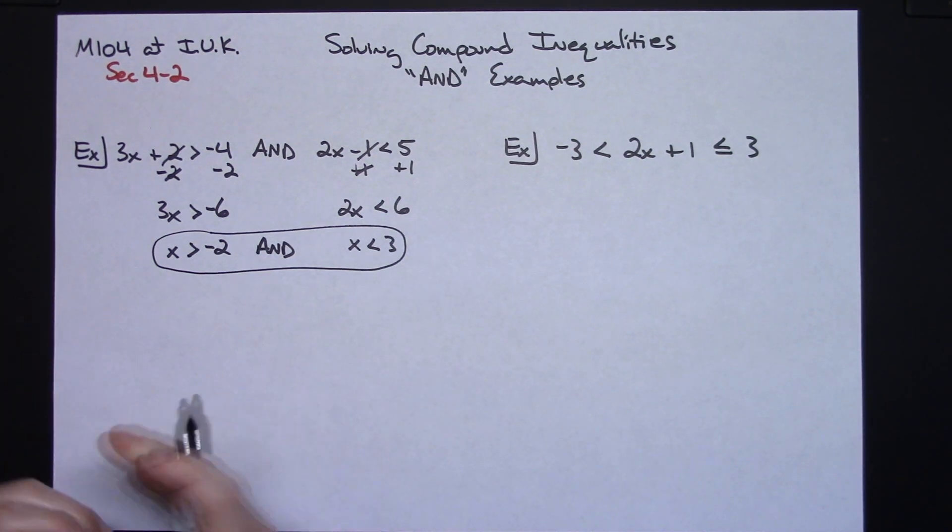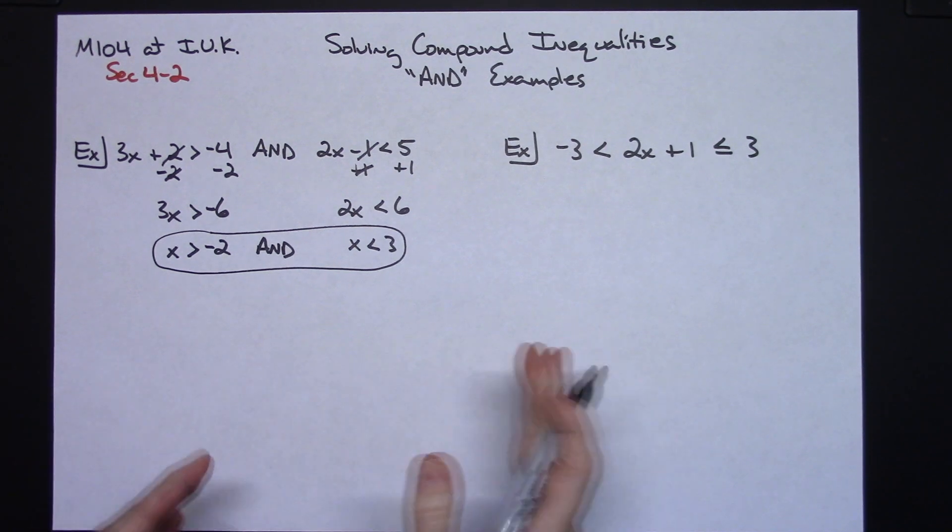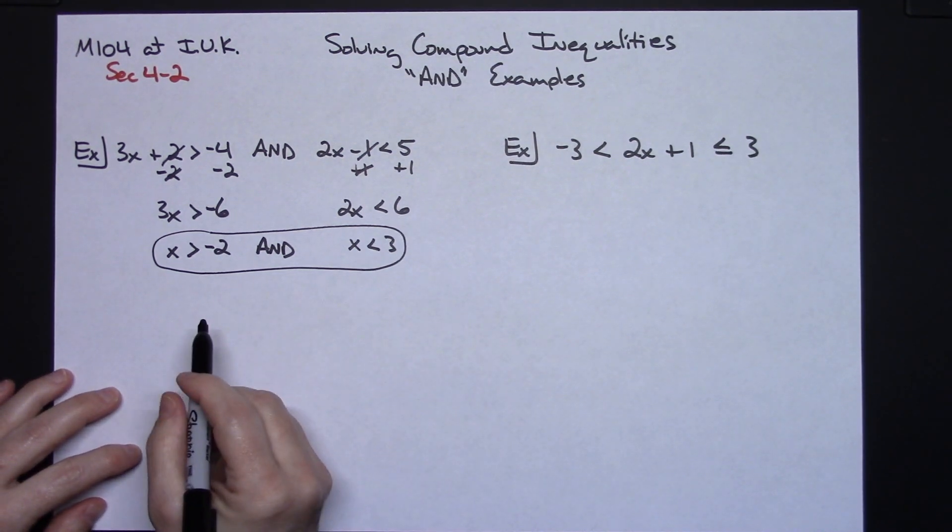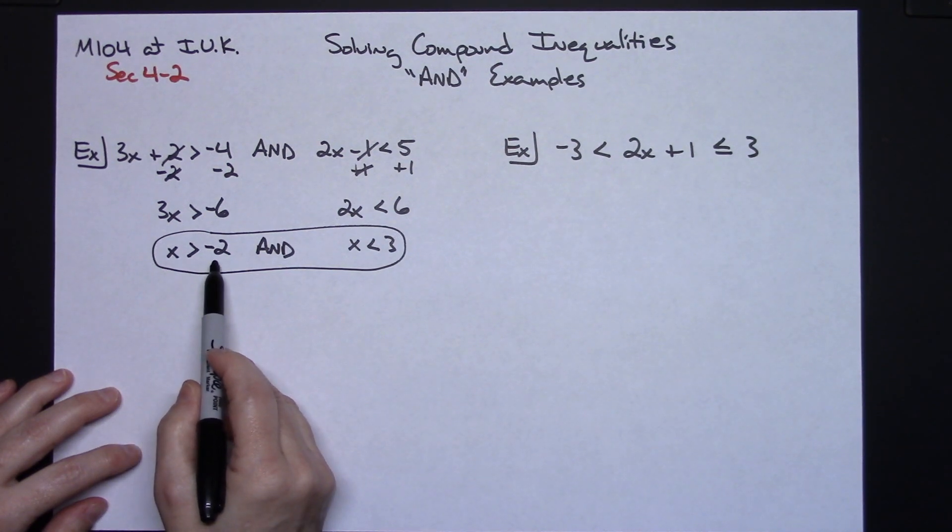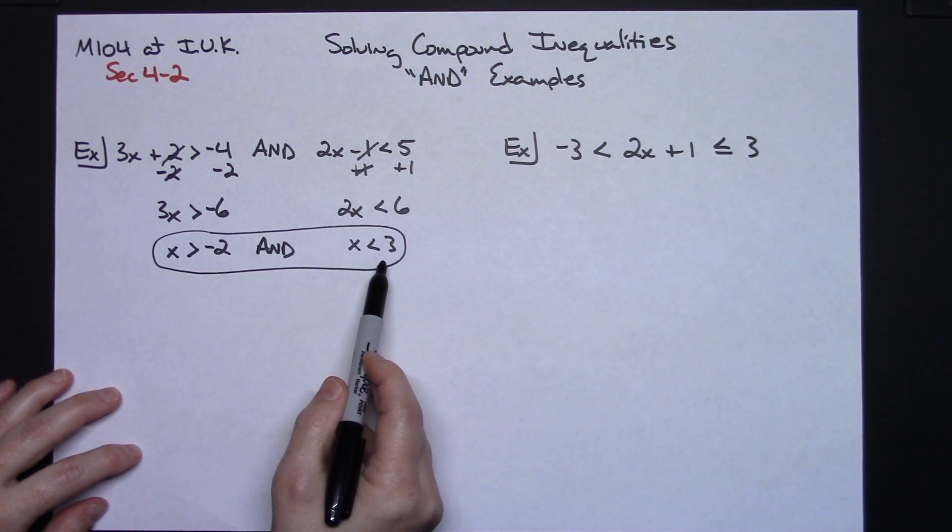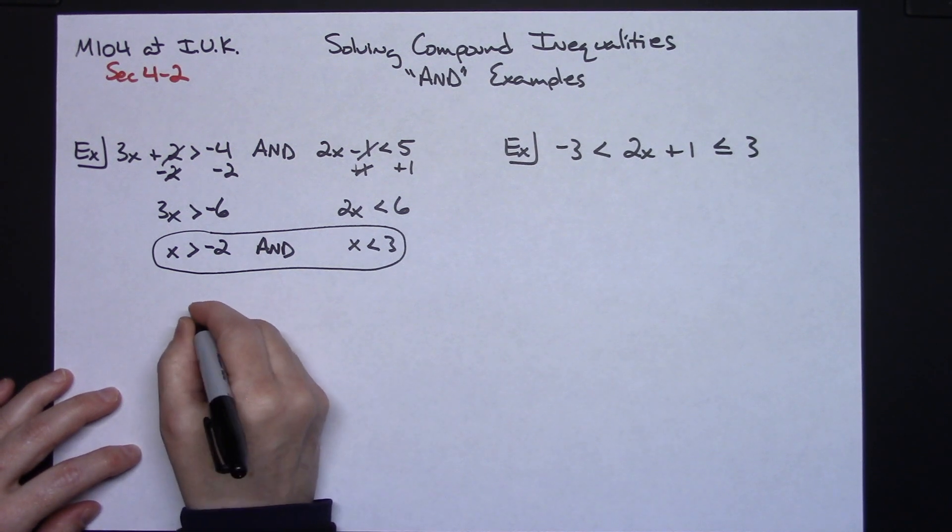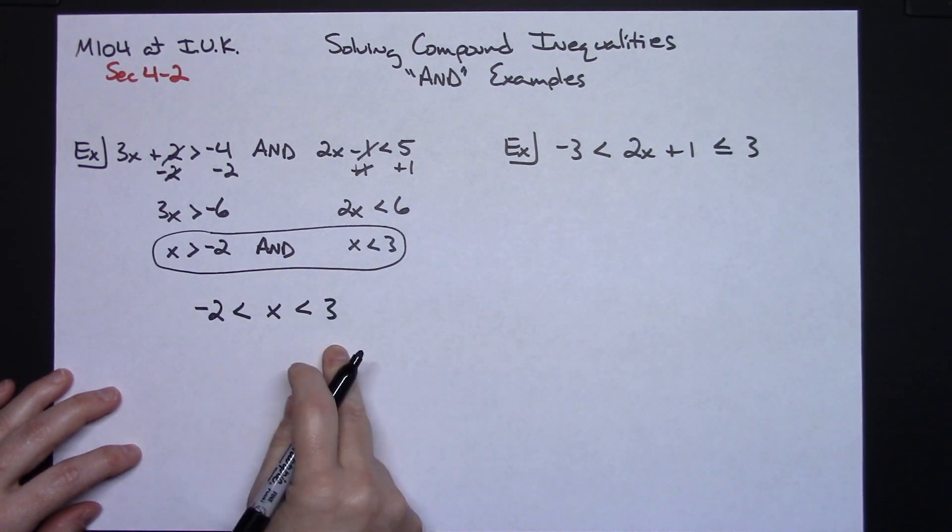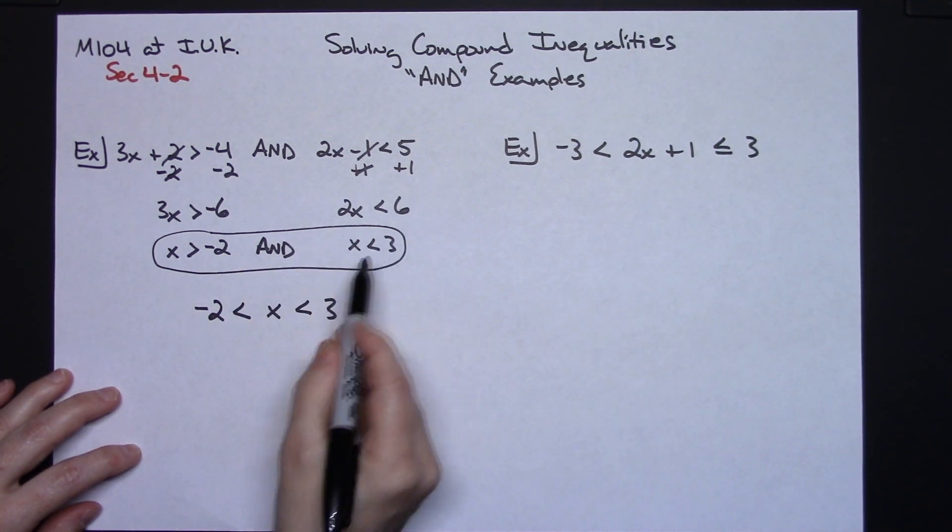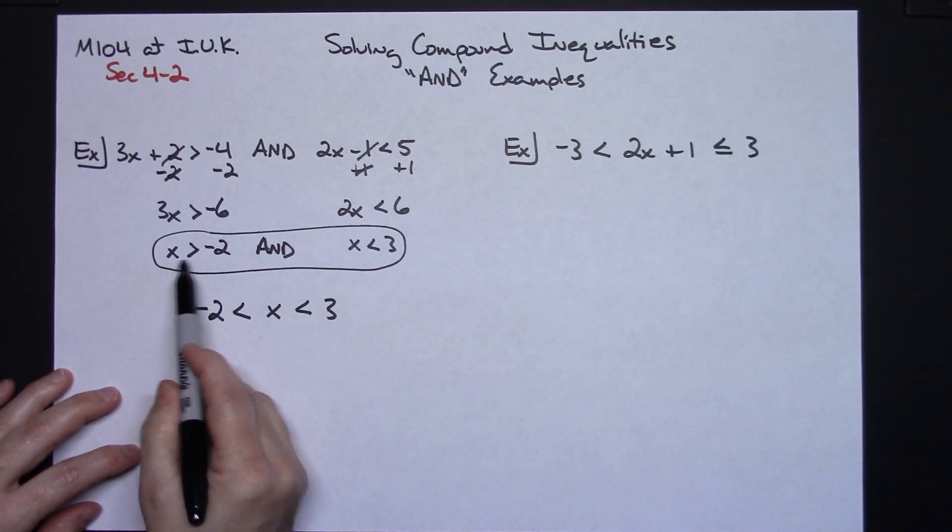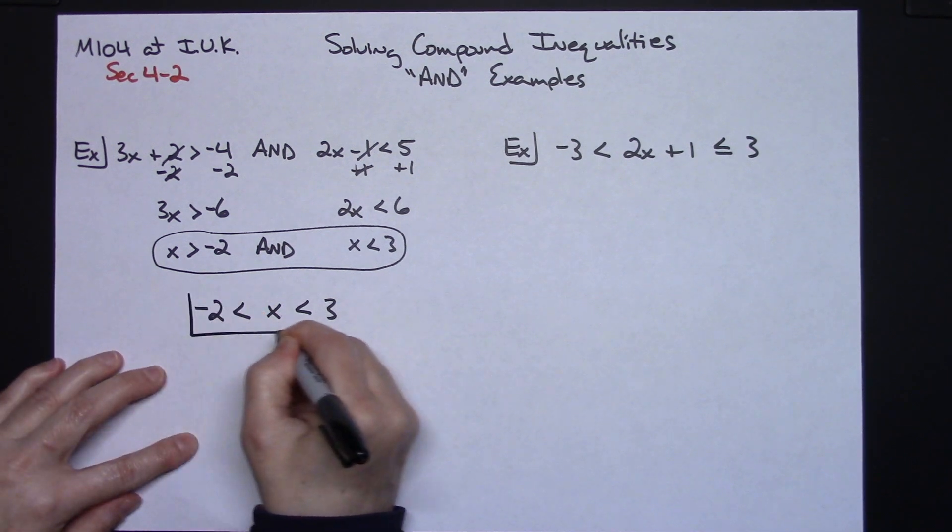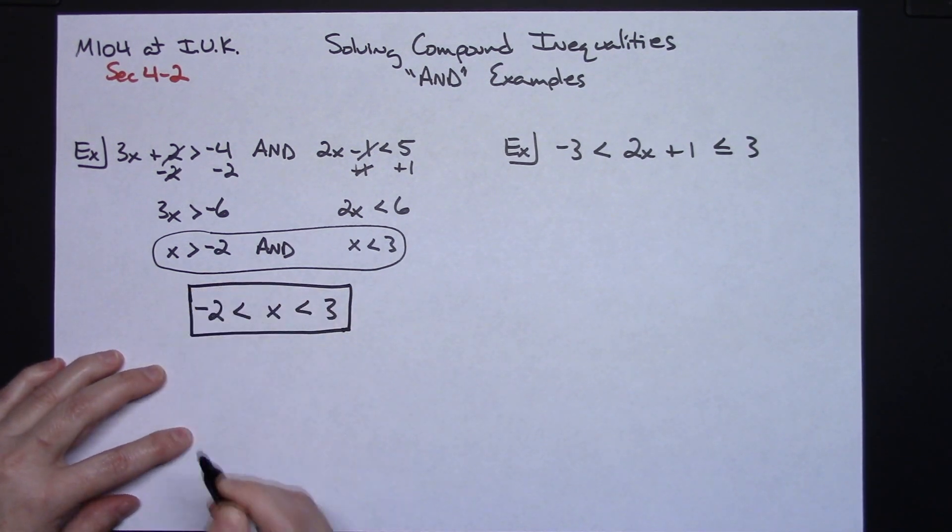All compound inequalities have x in the middle and either use less than or less than or equal to symbols. So for this one, if you kind of go through it and think about it, x is greater than negative 2 and x is less than 3. So negative 2 less than x is less than 3. x is going to be in the middle of this. So x is less than 3, x is greater than negative 2. So this is the compound inequality written in that format.